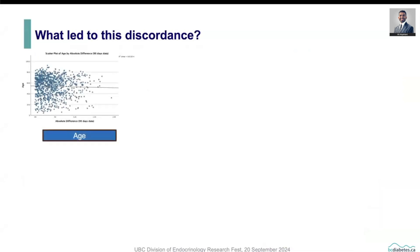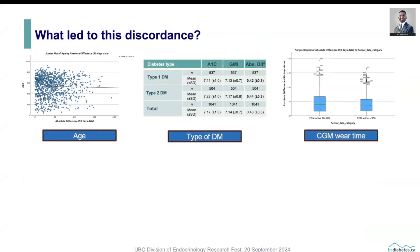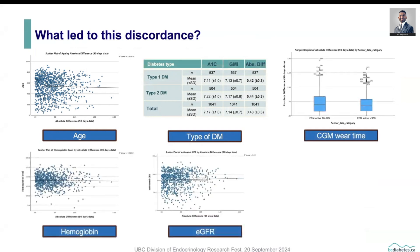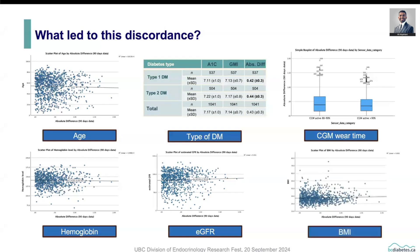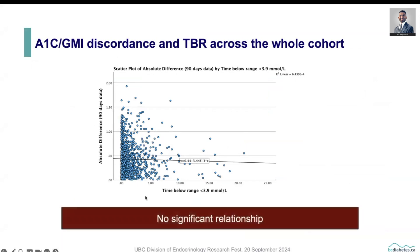We then asked: what led to this discordance? We looked at different factors that might play a role, including age, type of diabetes, CGM wear time, hemoglobin level, estimated GFR, and BMI. None of them was associated with this discordance. We also looked specifically at hypoglycemia and time below range, and plotted it against the discordance, but we did not find any significant relationship.